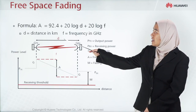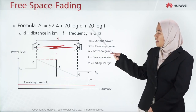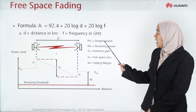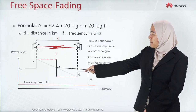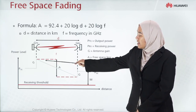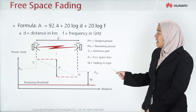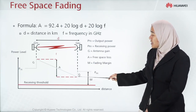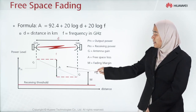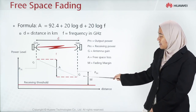The free space fading formula is given as shown here, where D is the distance in kilometers and F is the frequency in GHz. Referring to the figure below, you can see that the output power PTX — the power level is increased when combined with the antenna gain. After going through transmission, there is a free space loss that makes the power level decrease.